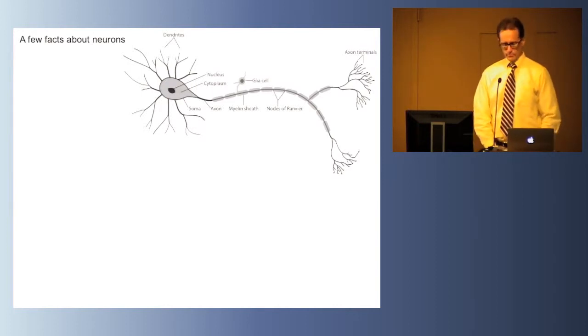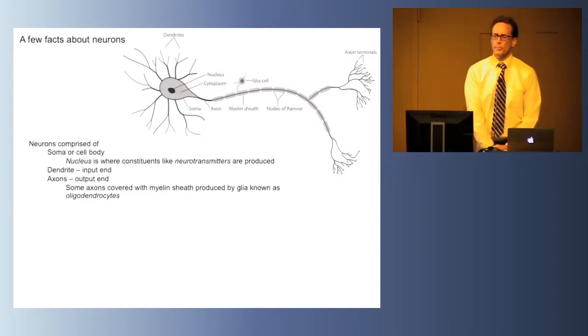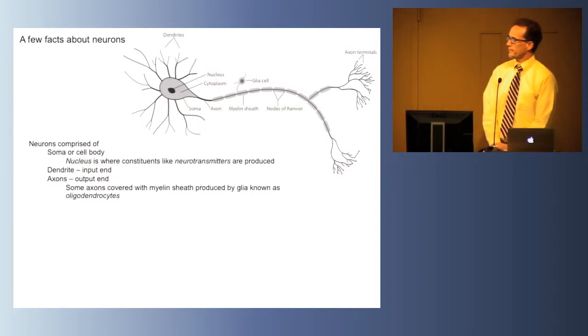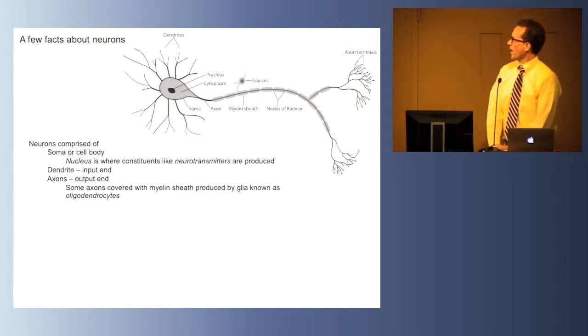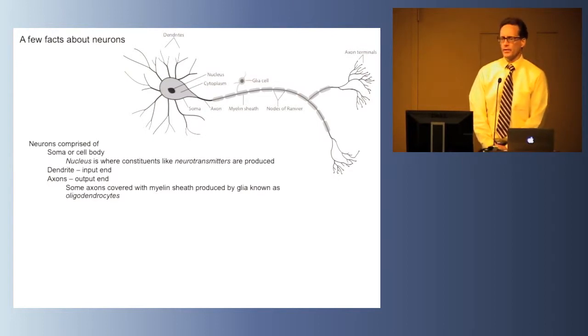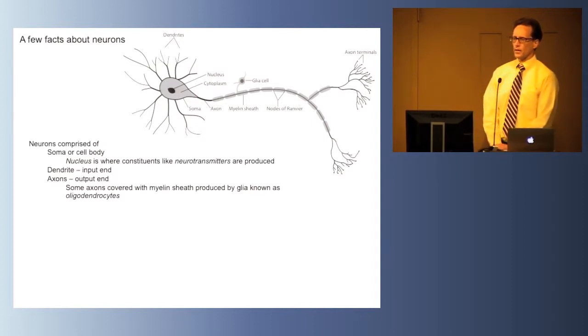Let's review some basic facts about neurons. Neurons are comprised of a soma or cell body. In the cell body is the nucleus where, through genetic control, the various proteins and other elements needed for nerve function are produced, including neurotransmitters. Branching off the cell body are dendrites that receive inputs from other neurons, and a given cell body can have many dendrites, but each cell body has one axon, the output end, which can connect with other parts of the nervous system, with muscles, or with glands.